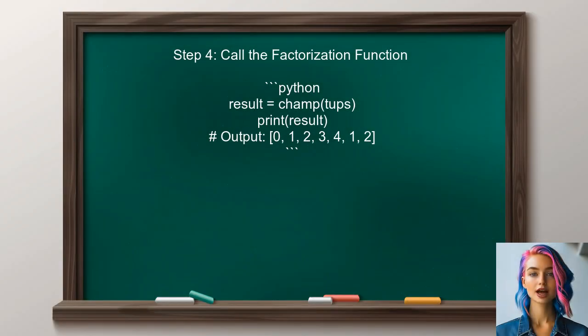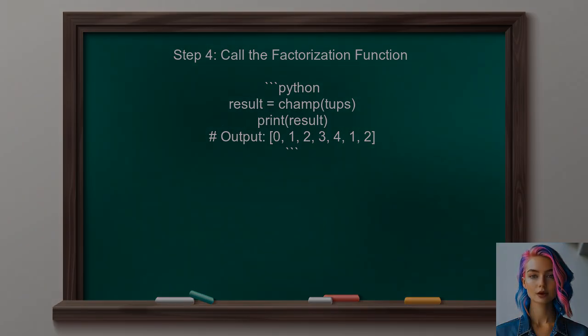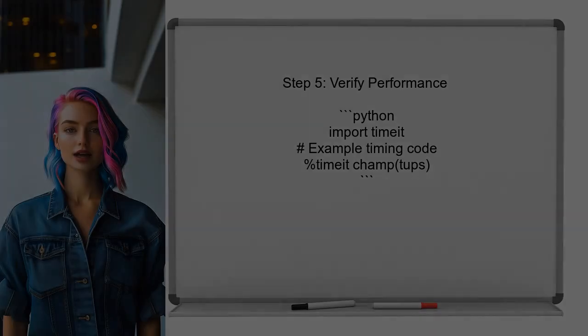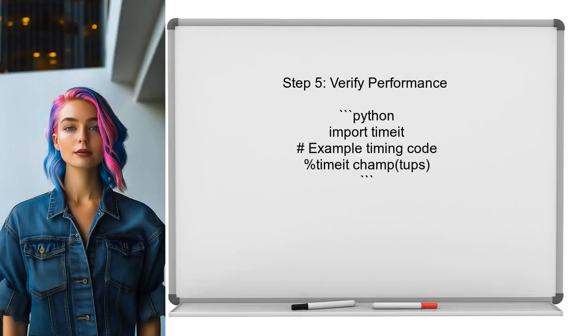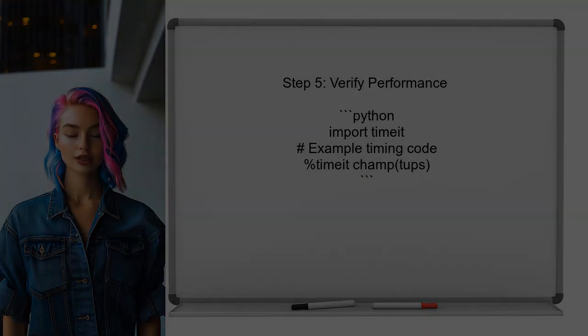After defining the function, the user should call it with the list of tuples to get the factorized output. This will return an array of integers corresponding to each tuple. Finally, the user can verify the performance of this method by timing it against other methods. This will help ensure that the chosen approach is efficient.